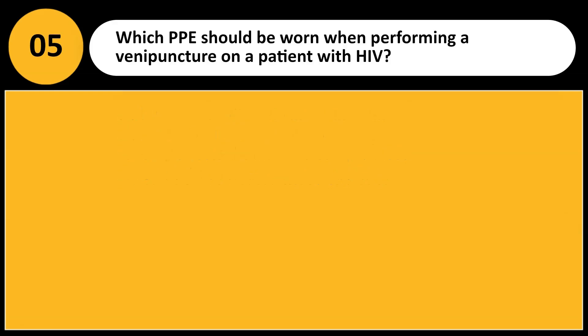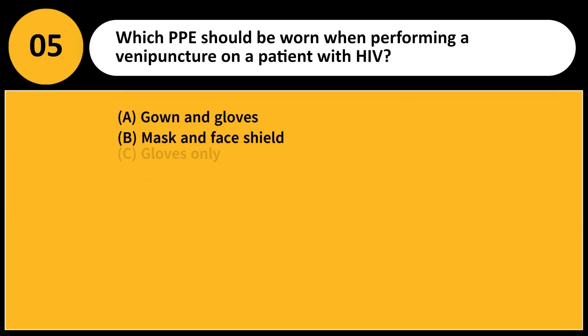Which PPE should be worn when performing a venipuncture on a patient with HIV? A. Gown and gloves. B. Mask and face shield. C. Gloves only. D. Gloves and face shield. Answer: C. Gloves provide necessary protection from blood-borne pathogens during venipuncture.